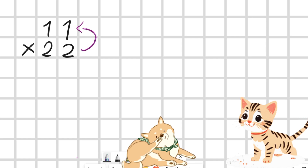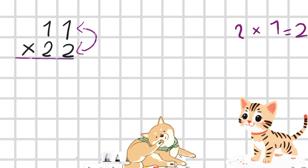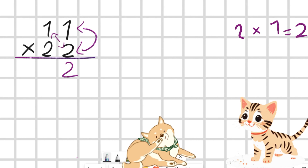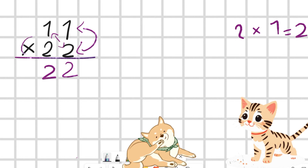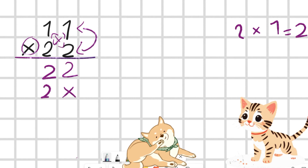Our first question is 11 multiplied by 22. First we are going to multiply 2 with 1 — two ones are two. So here we are just going to draw a line and write two. Then we are going to multiply like this, which is two ones are two, and then add across this sign over here below our first two.